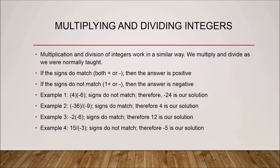Example two: negative thirty-six divided by negative nine — both numbers have the same sign (negative), so the final answer is positive four. Example three: minus two multiplied by negative six — the two numbers have the same signs, so the answer is positive twelve. Example four: fifteen divided by negative three — one number has a negative sign, so the final answer is negative five.